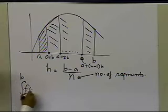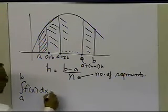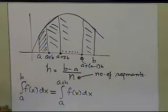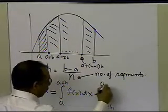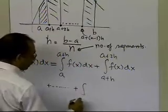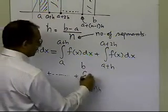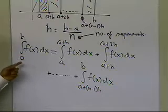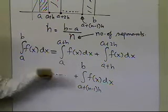You have the integral going from A to B of f(x) dx, which is exactly equal to the sum of n sub-integrals: the first going from A to A plus h, the next from A plus h to A plus 2h, and the last from A plus (n-1)h to B of f(x) dx. Keep in mind that there is no approximation involved here — this is just calculus, breaking the integral from A to B into n equal intervals of integration.